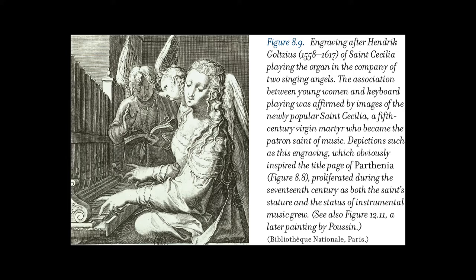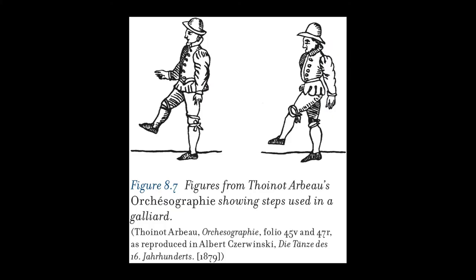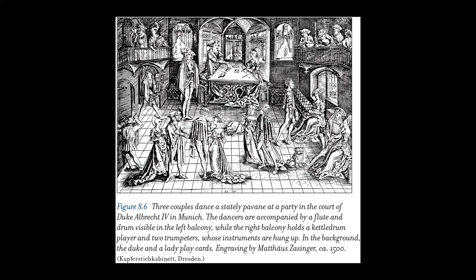The best known dance treatise from the era is Orchesography by dancing master Thoino Arbo. Social dance was considered a pleasant and profitable activity. Not only did it help one stay physically fit, but it also allowed men and women to mingle in arranged configurations and observe one another. Dancing was considered a kind of rhetoric by which persons, through movement, could persuade others that they have certain desirable personality traits.